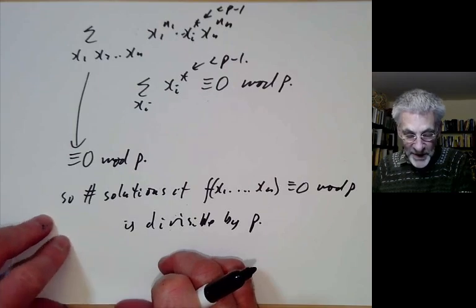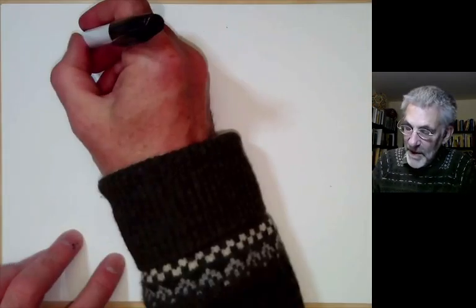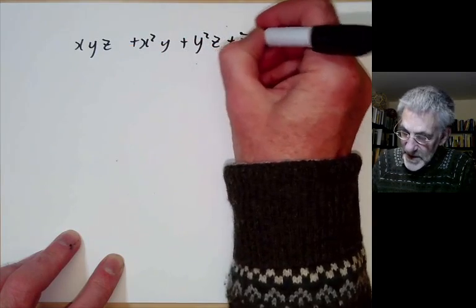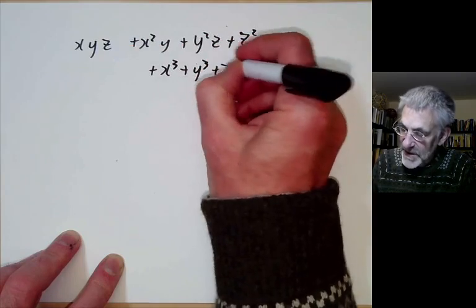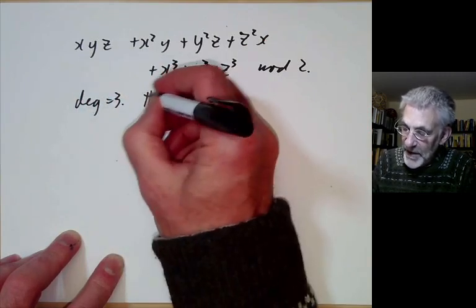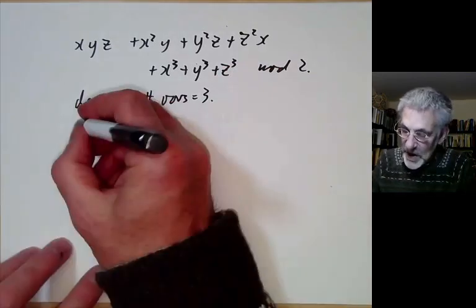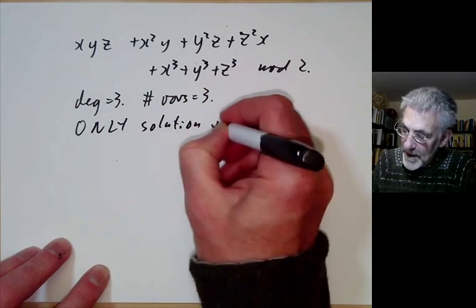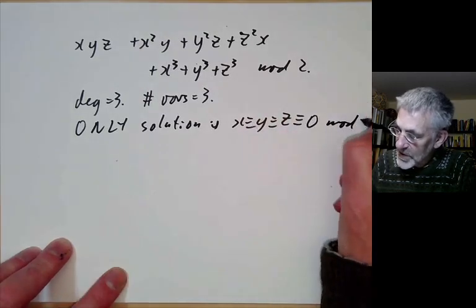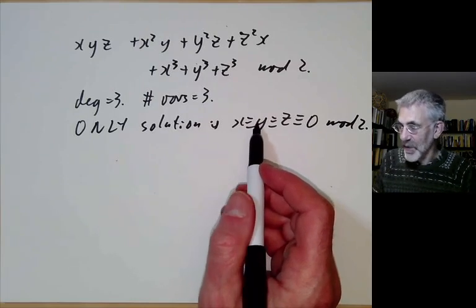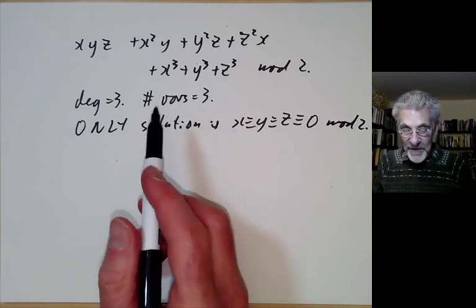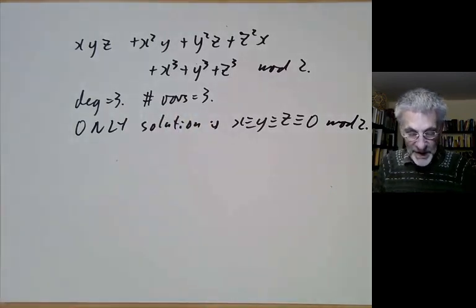Now let's give some examples. Suppose you take the polynomial xyz + x²y + y²z + z²x + x³ + y³ + z³ mod 2. Here the degree is equal to 3, and the number of variables is equal to 3. And you can check that the only solution is x = y = z ≡ 0 mod 2. So in this case, the number of solutions is not divisible by 2, because there's only one solution. So if the degree is equal to the number of variables, the Chevalier-Warning theorem fails. The degree has to be less than the number of variables, otherwise you can get counterexamples.